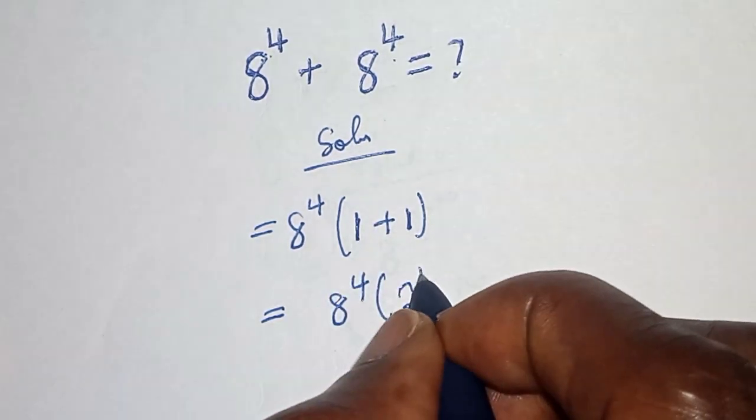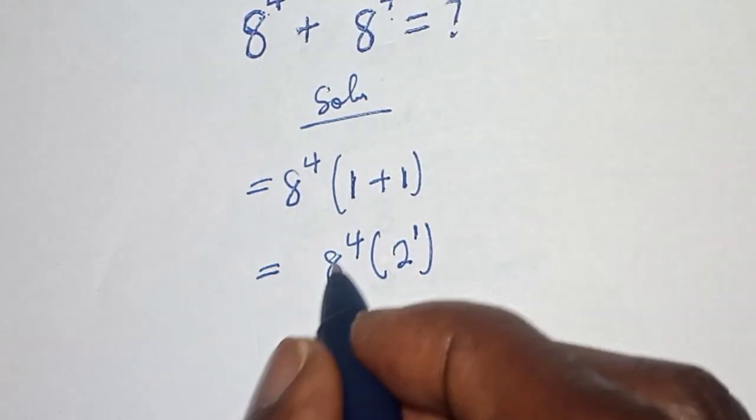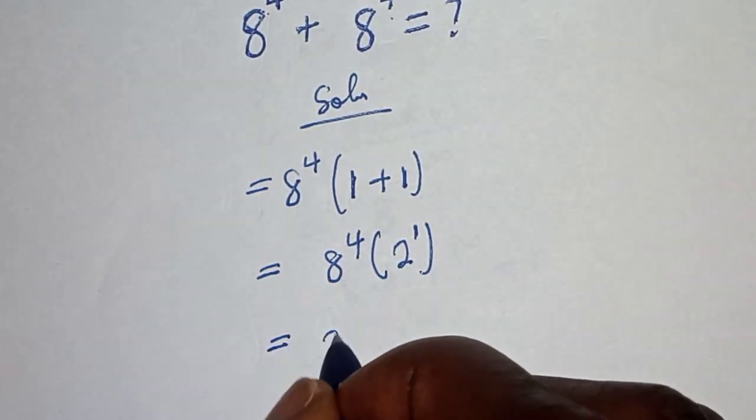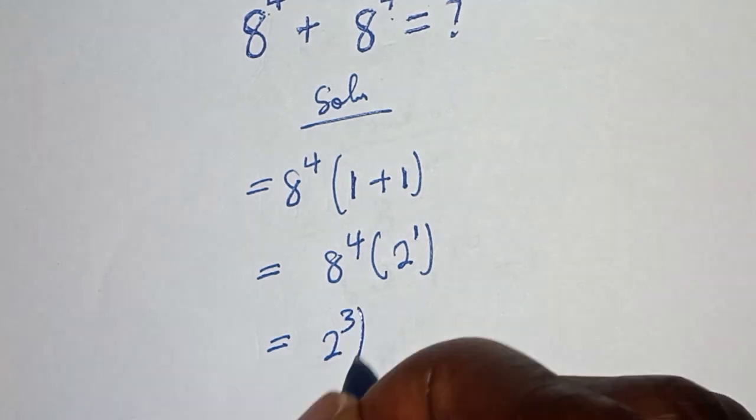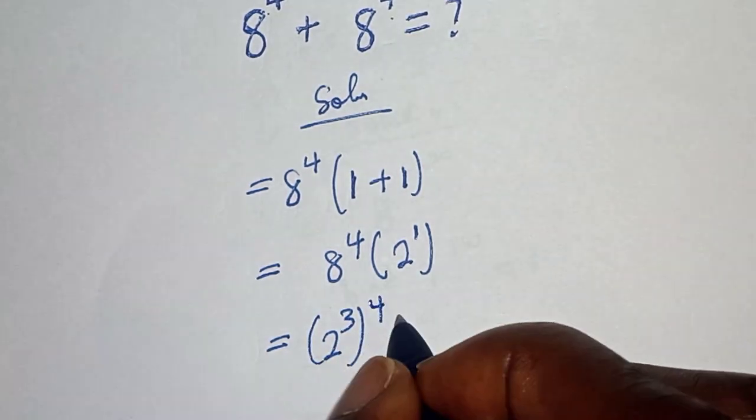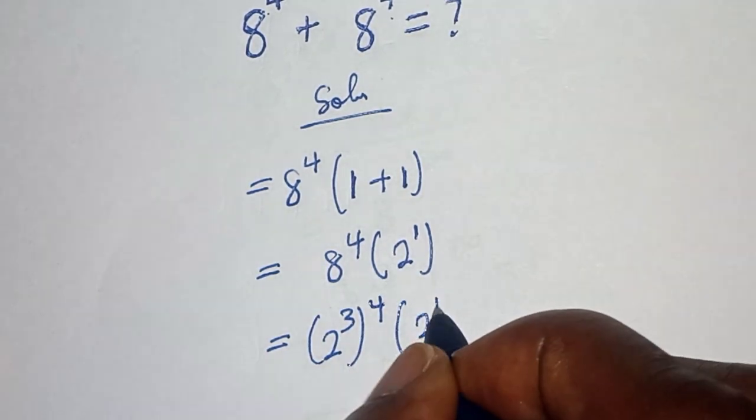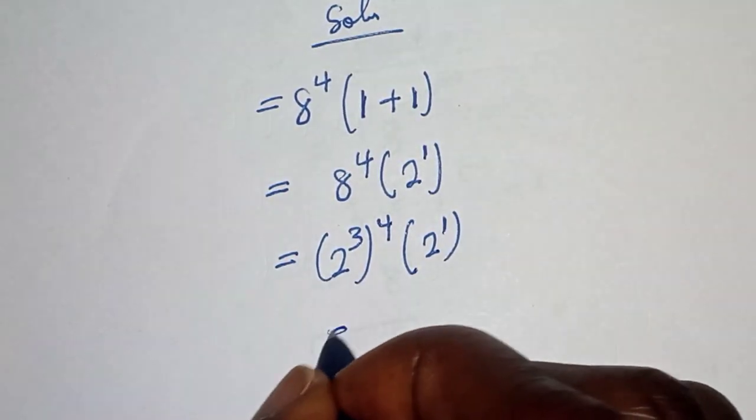This is 2, also raised to power 1. But 8 raised to power 4 can be written as 2 raised to power 3, raised to power 4, bracket, 2 raised to power 1. Take note of this rule: a raised to power n, raised to power m, equals a raised to power n times m.